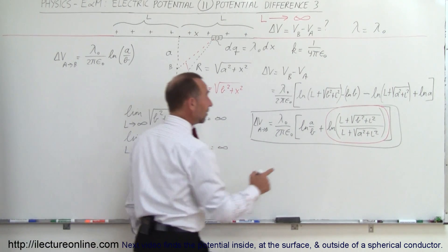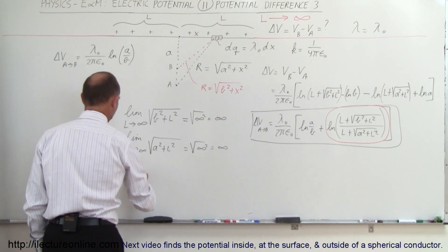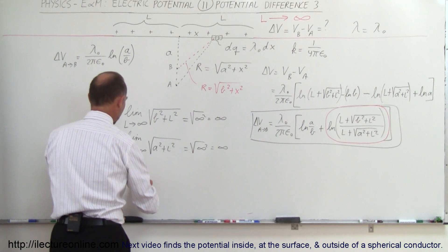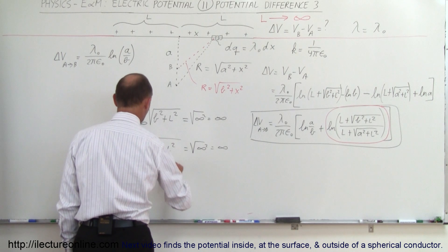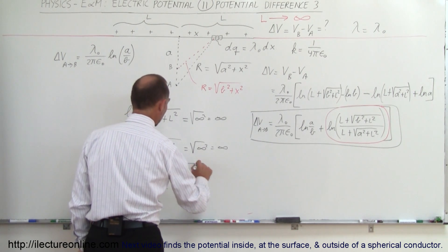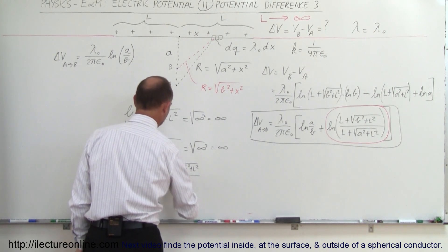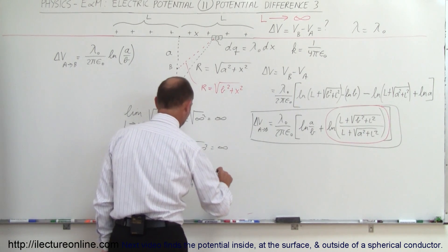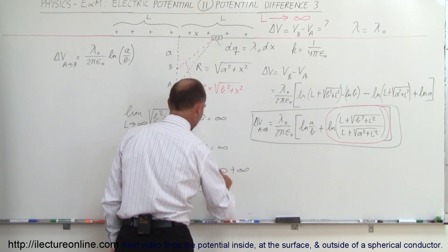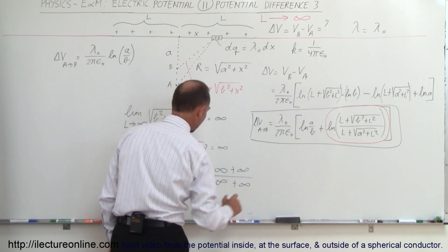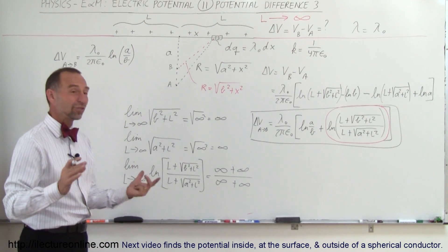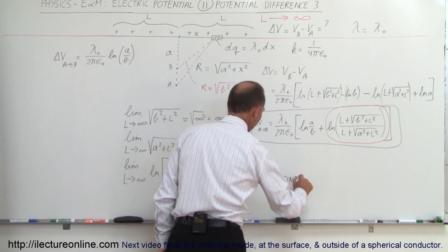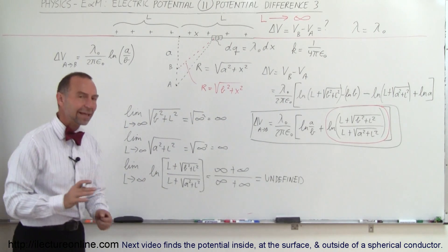And so then, what we can see is that this whole quantity, the limit as L approaches infinity of this quantity right here, of the natural log of L plus the square root of B squared plus L squared divided by L plus the square root of A squared plus L squared—when we apply the limit, we end up with infinity plus infinity divided by infinity plus infinity. Now you say, in the end, that of course is undefined, right? Infinity divided by infinity is undefined. And so I actually go, okay, how do we deal with that?